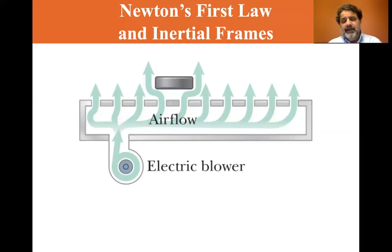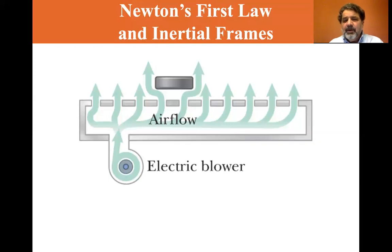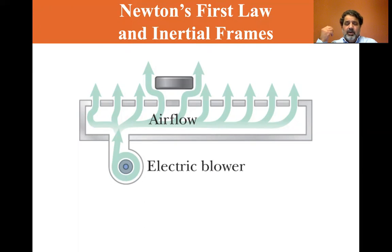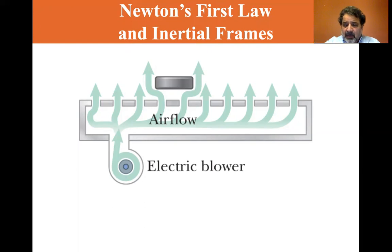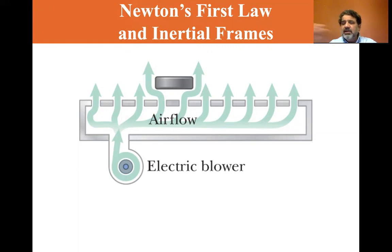I used to dangle a small ball from my rearview mirror, and I called it my accelerometer. You could tell: when I would take off, the little ball would go backward. If I were going at a constant speed, it would just dangle there. When I brake, it would go forward. When I would turn to the left, it would swing to the right. When I would turn to the right, it would swing to the left. It was an acceleration indicator.